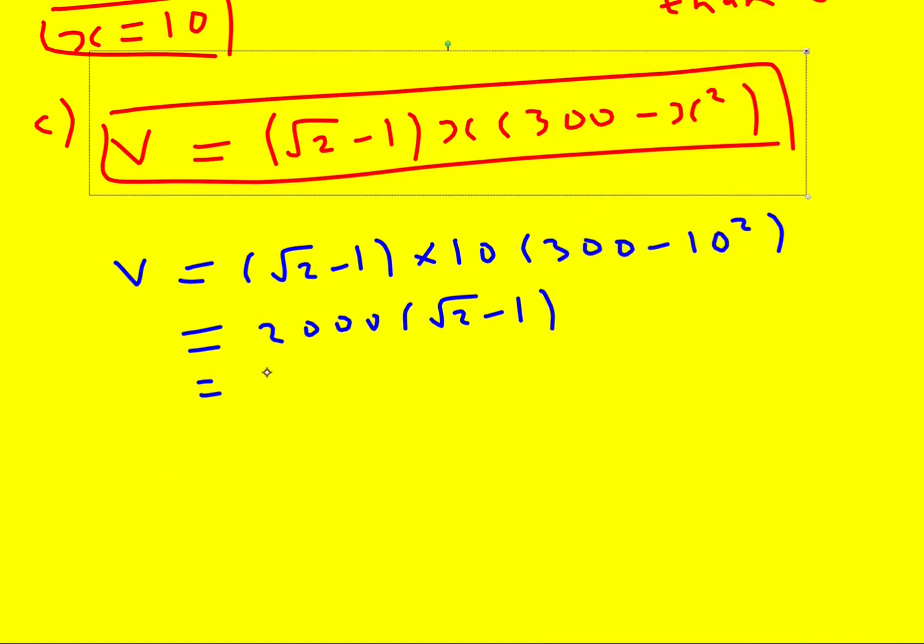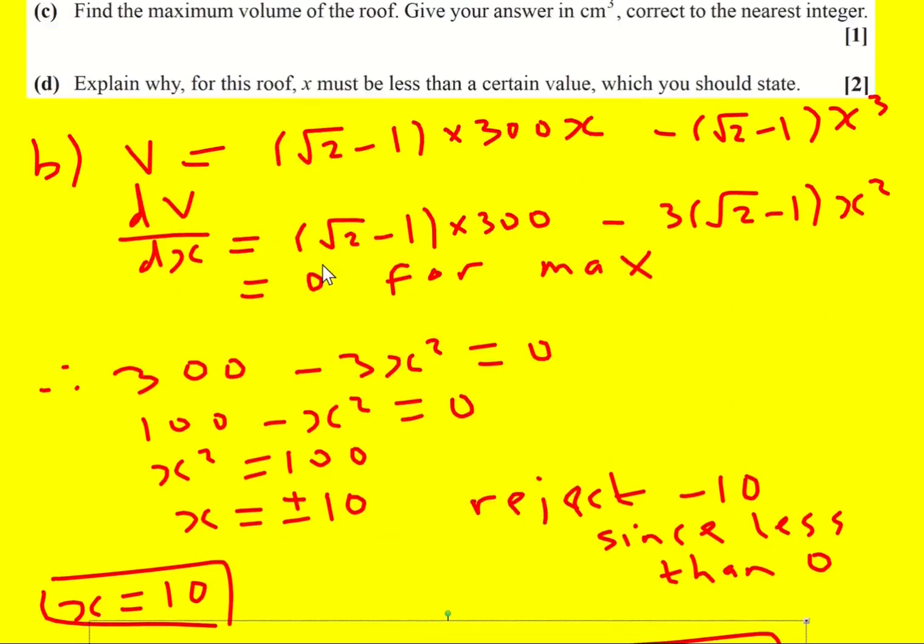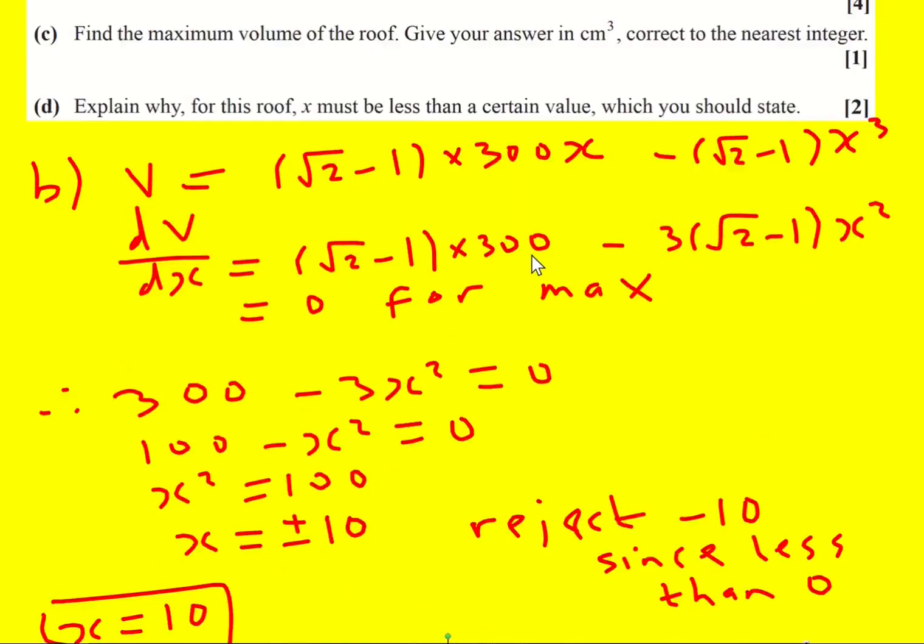828.427. Always good practice to just write a little bit more than you need, and then round it as required, nearest integer.